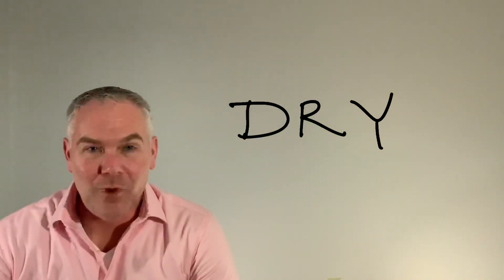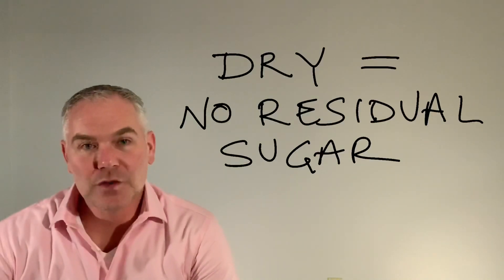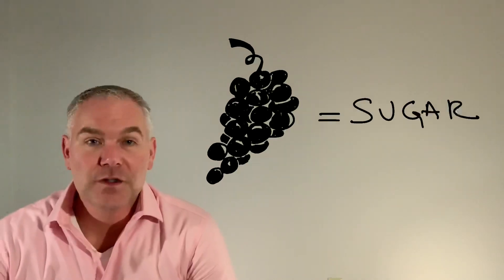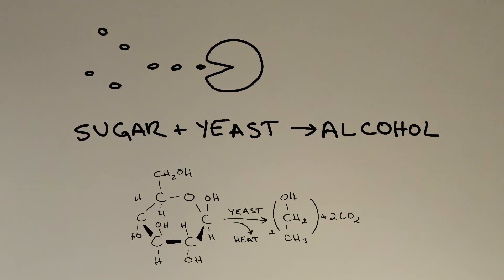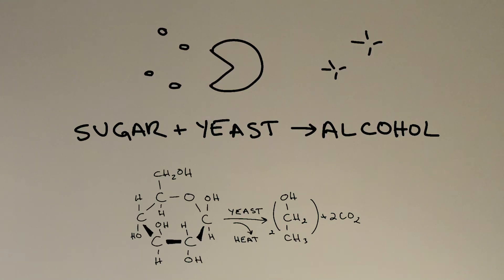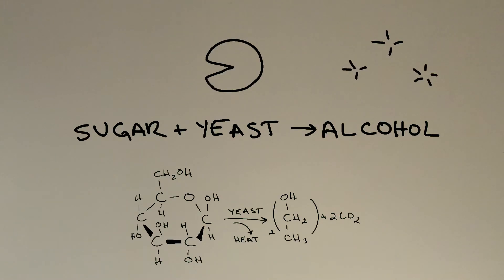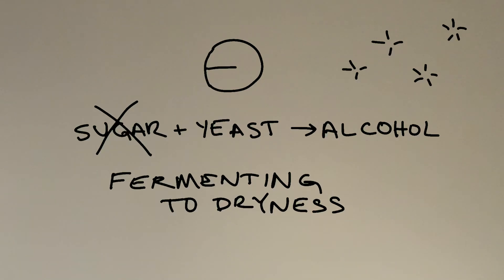First up: dry. A dry wine is a wine that has no residual sugar. When grapes are harvested they're full of sugar, and we take that sugary juice and introduce it to yeast — this is where the chemistry comes into play. The yeast eats the sugar and produces alcohol, and keeps going until all of the sugar is consumed. This is called fermenting to dryness.